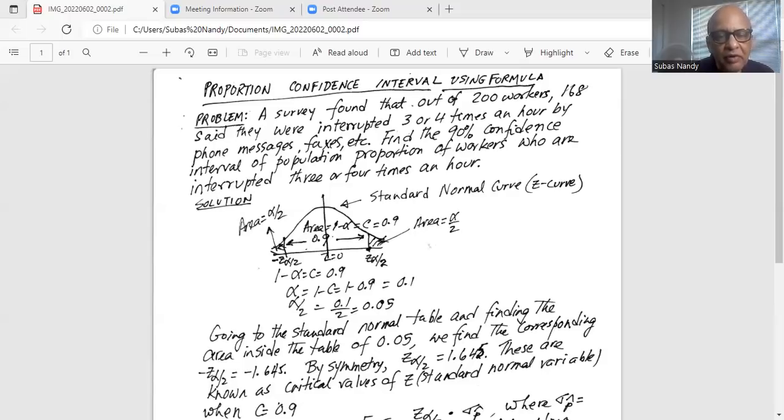So if you look at minus Z alpha by 2, on the left of it area is alpha by 2, 0.05. And this is the least probable region in which the population proportion will fall. And on the right of minus Z alpha by 2, the area that is not shaded is the area where most probably the population proportion will fall.